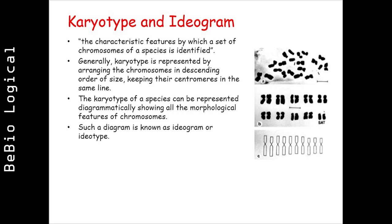What are karyotype and ideogram? A karyotype is represented by arranging the chromosomes in descending order of size, keeping their centromeres in the same line. The karyotype of a species can be represented diagrammatically showing all the morphological features of chromosomes, and such a diagram is known as an ideogram or idiotype.